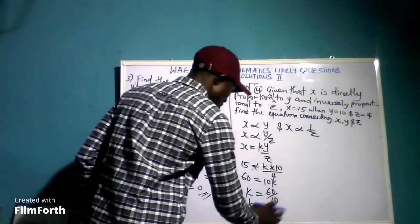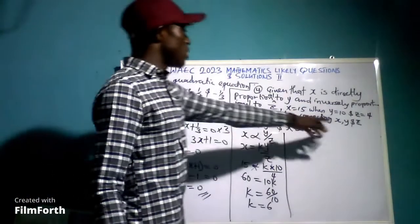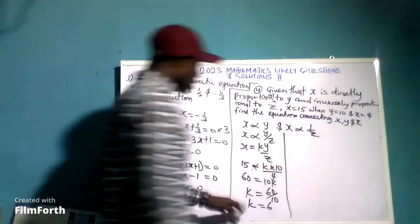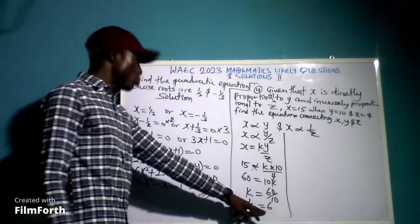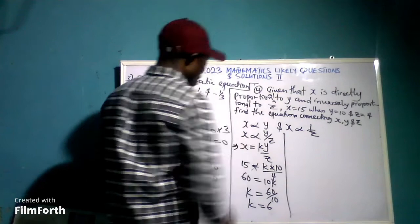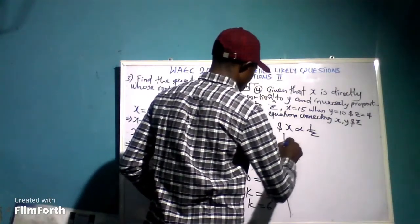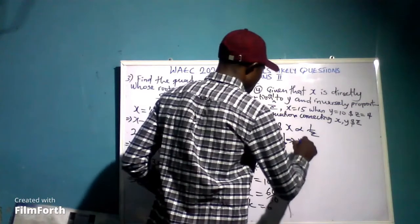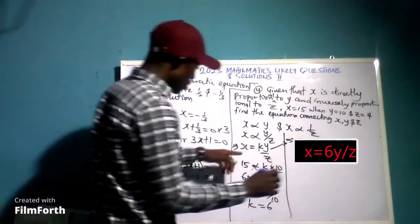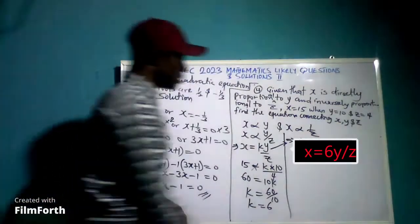This is not the final answer. We still have to find the equation connecting x, y, and z. Since k equals 6, we substitute back into the equation x equals k times y over z, giving x equals 6y over z. This is the final equation.